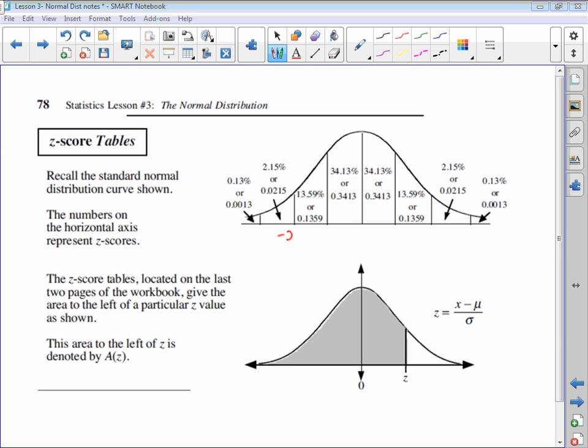So between negative 2 standard deviations and negative 1 standard deviation, or a z-score of negative 2 and negative 1, there is 13.59%. The z-score table that I've given you is always going to give you the area to the left, all of this area to the left. So if this is the z-score, it will give you the whole area to the left, always to the left of that z-score.